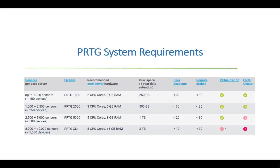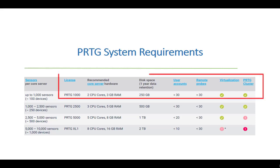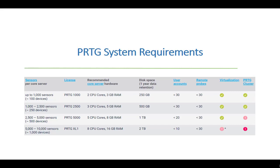As you can see on screen, the system requirements table gives clear information about PRTG hardware needs. For a PRTG 1000 license covering 1000 sensors for 100 devices, you need two CPU cores, 3 GB of RAM, and 250 GB of disk space. It's recommended to stay below 30 active user accounts and below 30 remote probes, and the software can be installed on a virtualization platform or physical hardware.